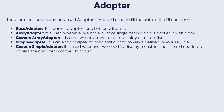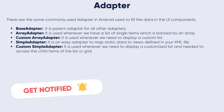The custom simple adapter is used whenever we have to create a custom list. As discussed earlier, the array adapter is used when we have a list of single items backed by an array. If we need customization in a list view or grid view we use the simple adapter, and when we need even more customization or need to handle click events on a particular view, then we need to implement a custom adapter.